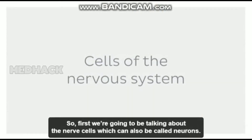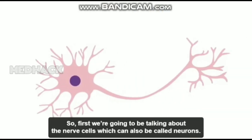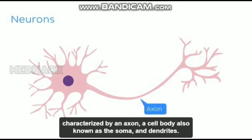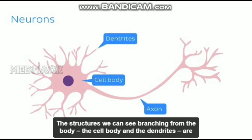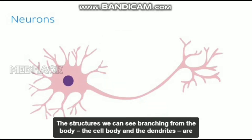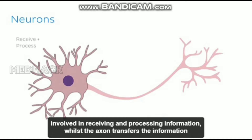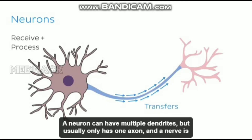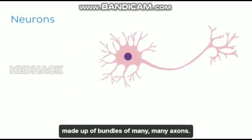So first we're going to be talking about the nerve cells, which can also be called neurons. We can see a cartoon depiction of a neuron here, and in this image we can see that it's characterized by an axon, a cell body — also known as the soma — and dendrites, the structures we can see branching from the body. The cell body and the dendrites are involved in receiving and processing information, whilst the axon transfers the information to other cells. A neuron can have multiple dendrites, but usually only has one axon, and a nerve is made up of bundles of many, many axons.